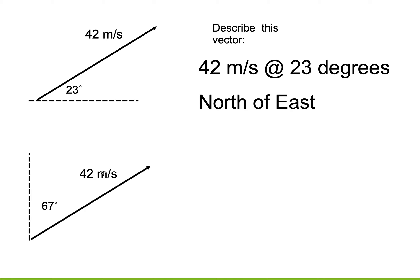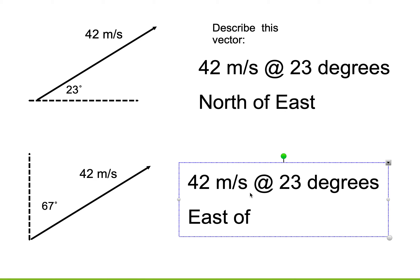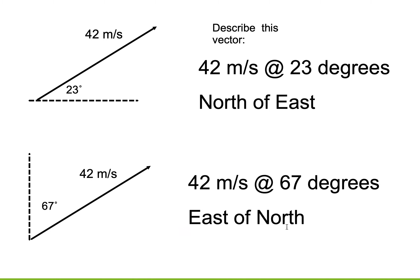It's the same vector, but I'm going to describe it slightly differently. I'm going to say 42 meters per second at 23 degrees—oh wait, I didn't mean to say 23 degrees. I meant to say 67. Sorry about that. And this time I'm going to say east of north.